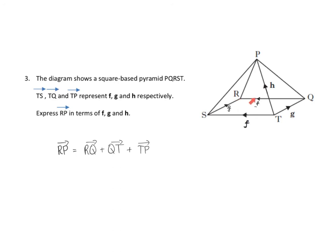So R to Q - I'm going against the flow of the arrow, so it's going to be negative f. The main thing here is to remember, if you're going against the flow of the arrow, then it is a negative of that vector. So from Q to T, I'm going against the flow of the g arrow, so I'm going back that way, so it's going to be negative g. And then from T up to P, going with the arrow, so it's going to be plus h.